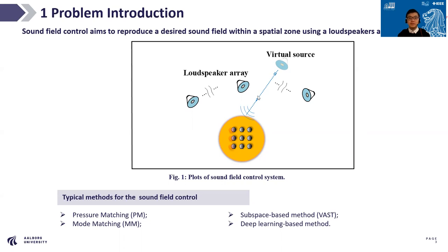The typical methods for Sound Field Control can be divided into four categories: Pressure Matching Method, Mode Matching Method, Subspace-Based Method, and Deep Learning-Based Method.